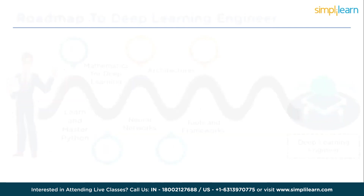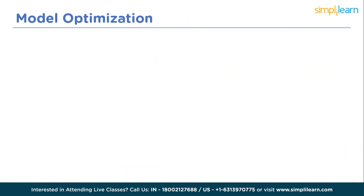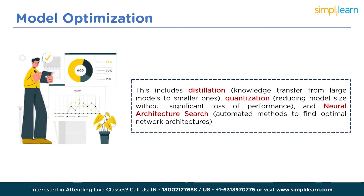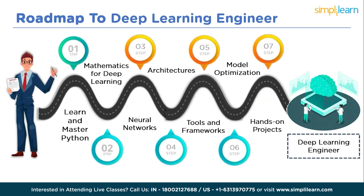After that, you should learn model optimization. Understand techniques for model optimization, including distillation — knowledge transfer from large models to smaller ones — quantization, which reduces model size without significant loss of performance, and neural architecture search, which uses automated methods to find optimal network architectures.